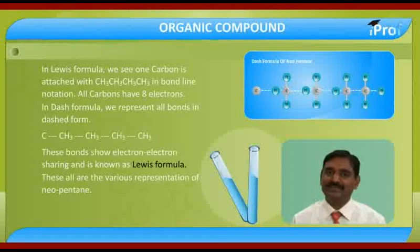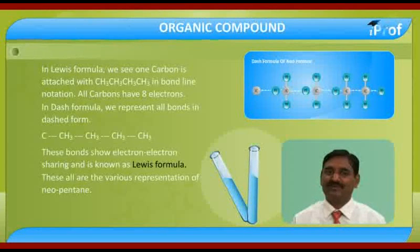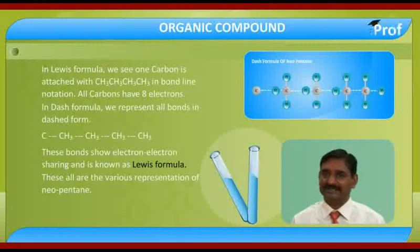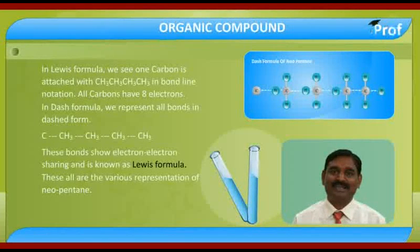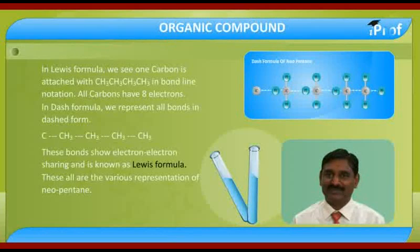In neopentane, we see the structural formula as CH3 groups. In neopentane, the structural formula shows CH3 attached with a central carbon, then CH3, CH3, and CH3. This is the neopentane structural formula. The molecular formula of neopentane is C5H12. In condensed formula, CH3 whole 4 is attached with carbon.